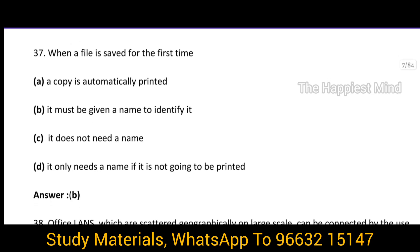Question 37. When a file is saved for the first time, the answer is option B — it must be given a name to identify it. So when a new file is saved for the first time, it must be given a name so that you can identify it next time.